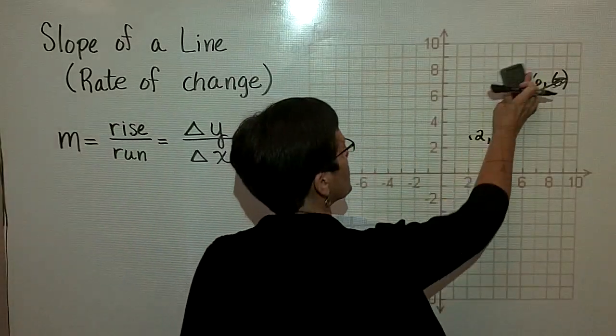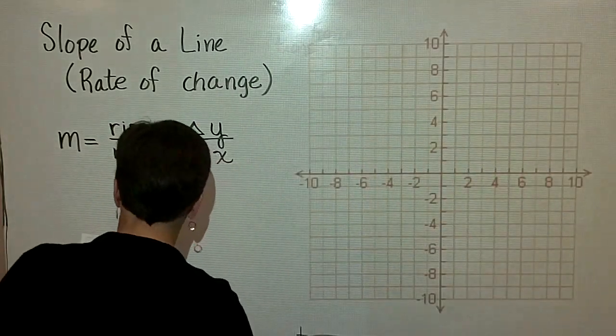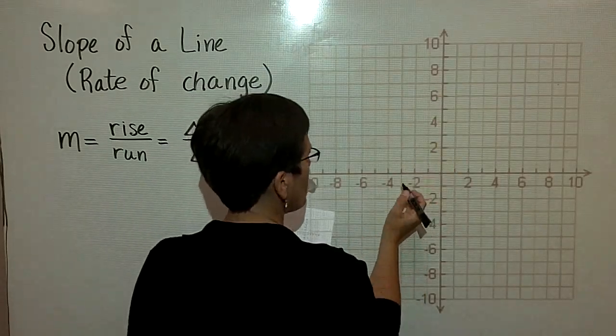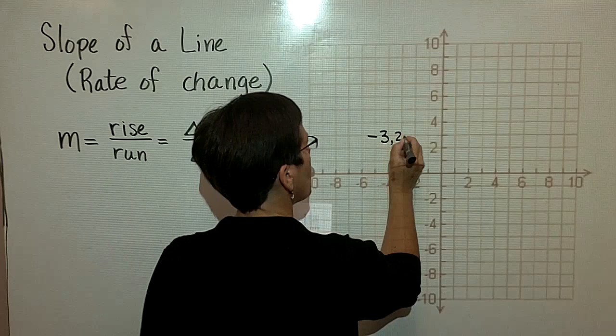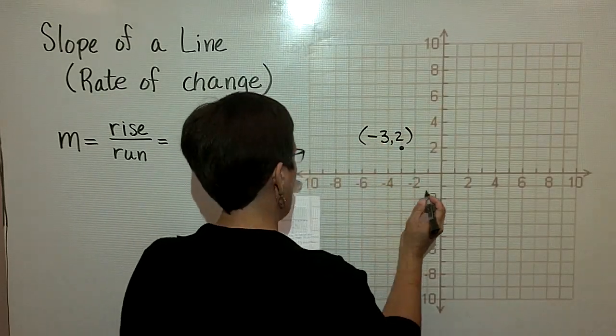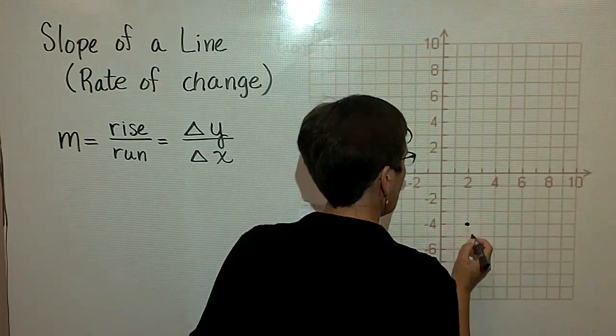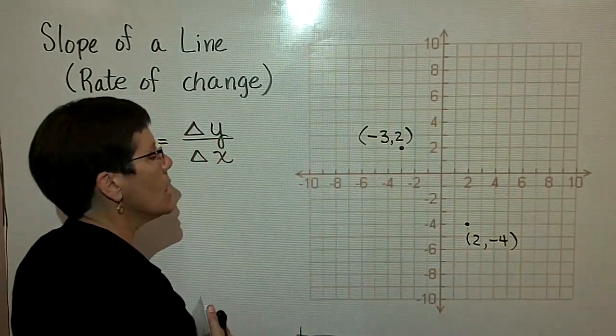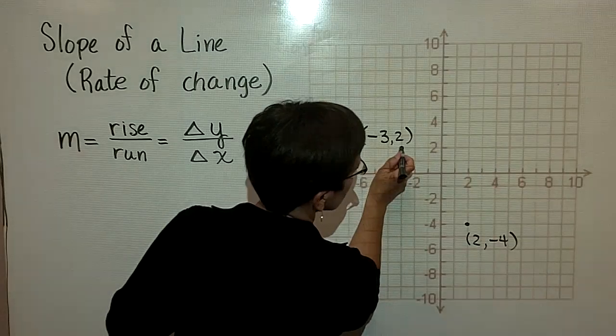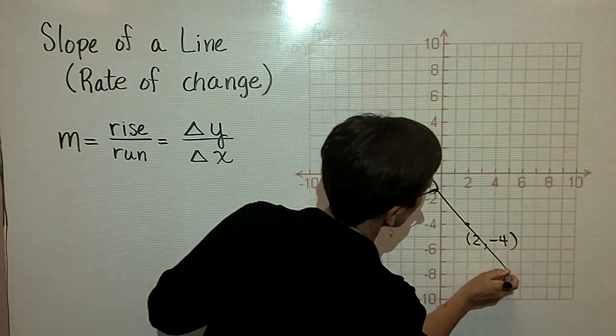Let's look at another couple of ordered pairs. Say I were to use this ordered pair where X is a negative 3 and Y is a positive 2, and this ordered pair where X is 2 and Y is a negative 4. The line itself looks like this.